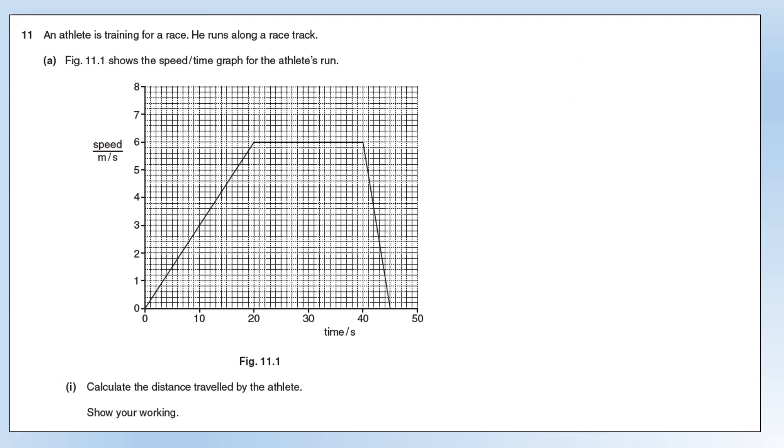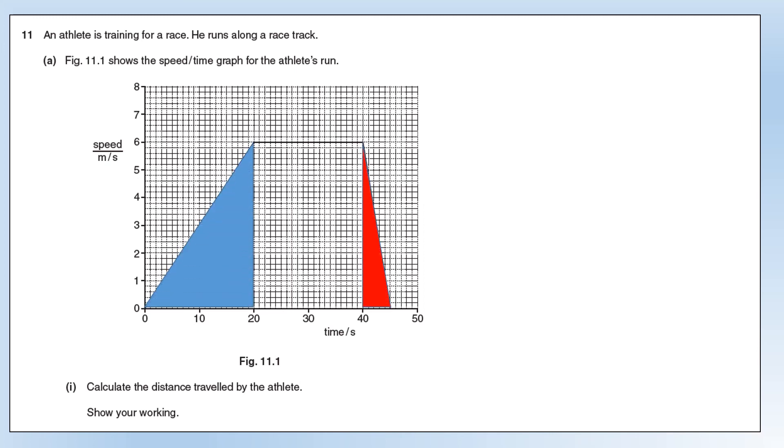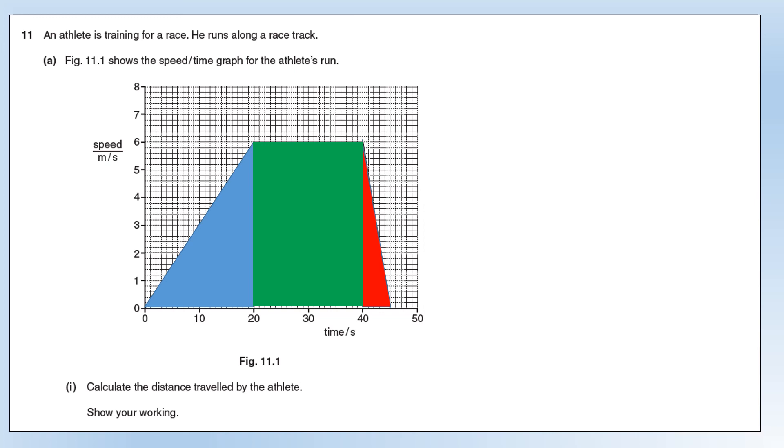The final physics question, question 11, we've got an athlete training for a race, and we've got a speed versus time graph. We want to calculate the distance travelled by the athlete showing the working out. What you should know is the distance travelled is the area under this graph. I'm going to split the graph up into three shapes, as you can see on here, and figure out the area of each of the shapes, and then add them together. We've got two triangles, so we're using half base times height to give the area. Now we've got a rectangle, so just base times height. Put all those together and we get a distance travelled of 195 metres.